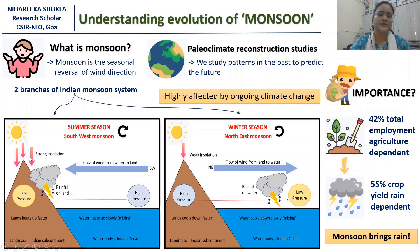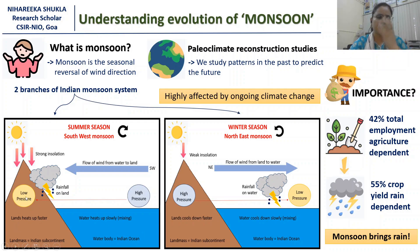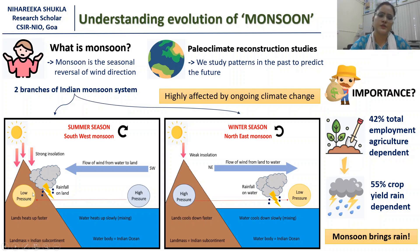During the summer season, there is strong insolation which heats up the land area faster than the water. Therefore, a low pressure area develops over the land and the wind starts to blow from the ocean towards the land — that is, from the southwest direction.